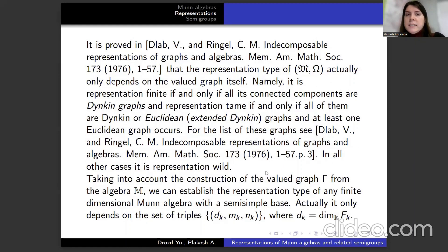It's provided in Dlab and Ringel's papers that the representation type of (M,ω) actually only depends on the valued graph itself. Namely, it is representation finite if and only if all its connected components are Dynkin graphs, and representation tame if and only if all of them are Dynkin or Euclidean extended Dynkin graphs, and at least one Euclidean graph occurs.